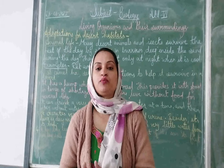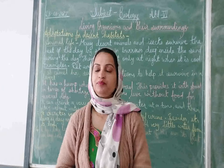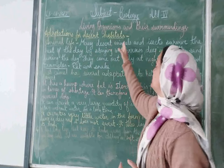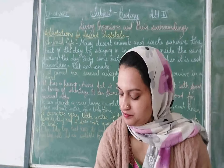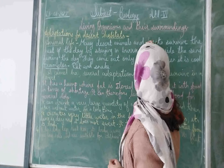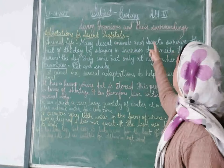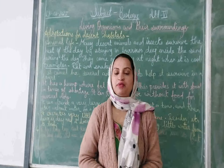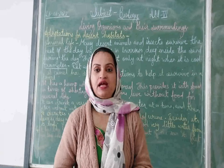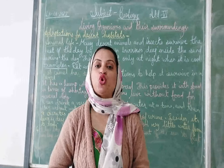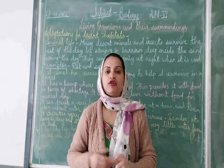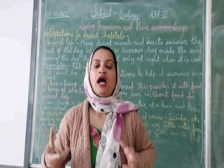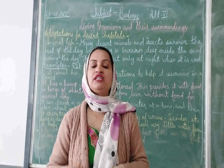Now we are going to move further — the adaptation of animals in the desert. What are the adaptations of animals in the desert? Many desert animals and insects survive the heat of the day by hiding in burrows. As we discussed, in the desert area the temperature is very very high — it's too hot there, so it's very difficult for any life to survive. Animals stay during the daytime in the burrows.